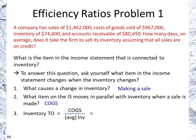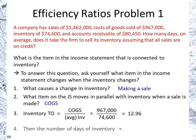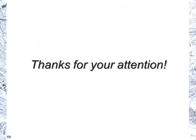Using cost of goods sold of 967,000 divided by inventory of 74,600, that gives us 12.96 times — inventory is being turned around in a year. That's more than once a month. So for days inventory, we take 365 divided by 12.96, and we get a number a little under a month on average — that's 28.2 days. Thank you for your attention, hope that helped.